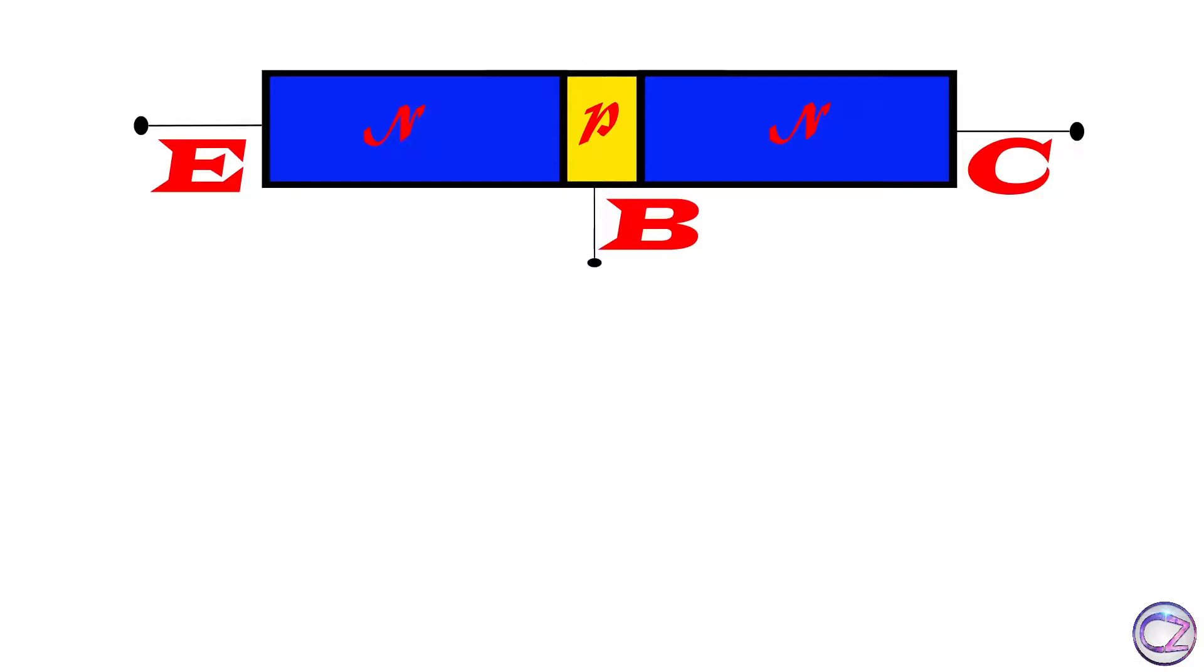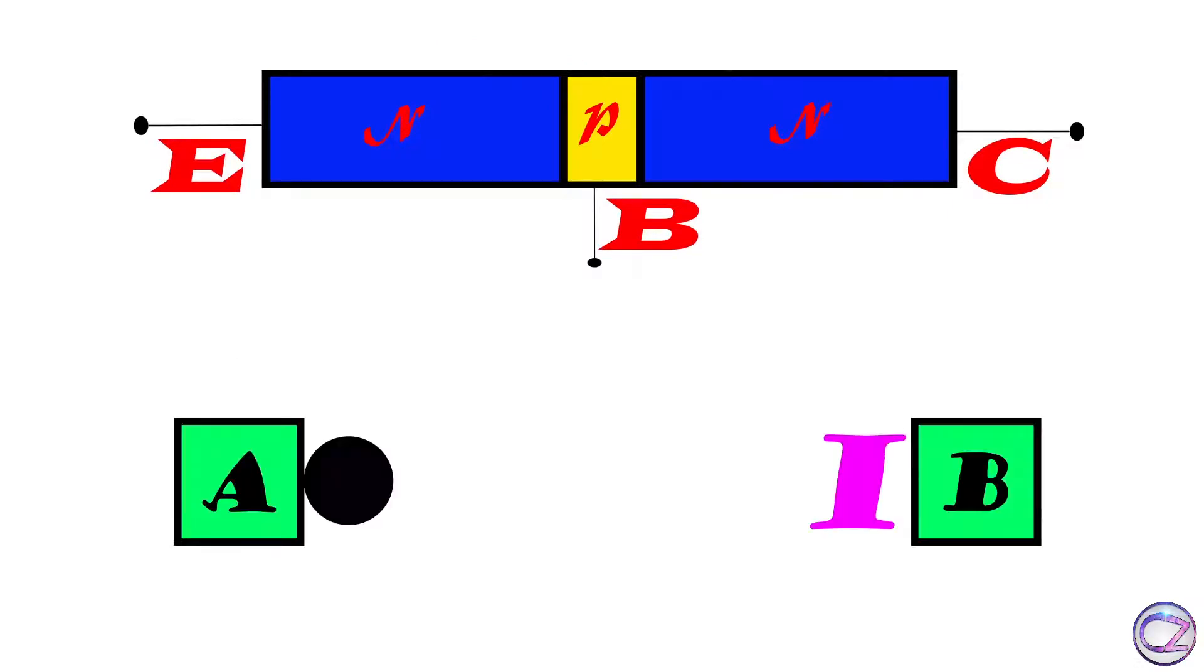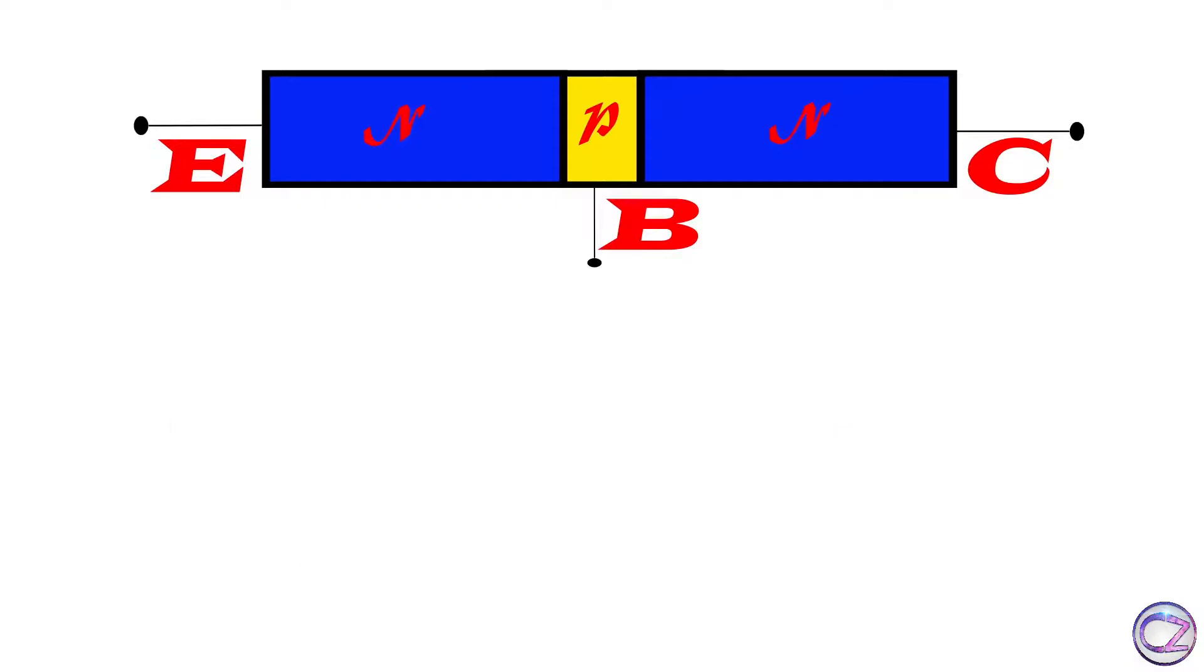Current flow in NPN transistor. Before we start, you need to know a convention. If negative charge carriers, I mean electrons, flow from object A to object B, then current will flow from object B to object A. But if positive charge carriers, that means holes, flow from object A to object B, then current will also flow from object A to object B. It's just a convention. Let's get to the point.